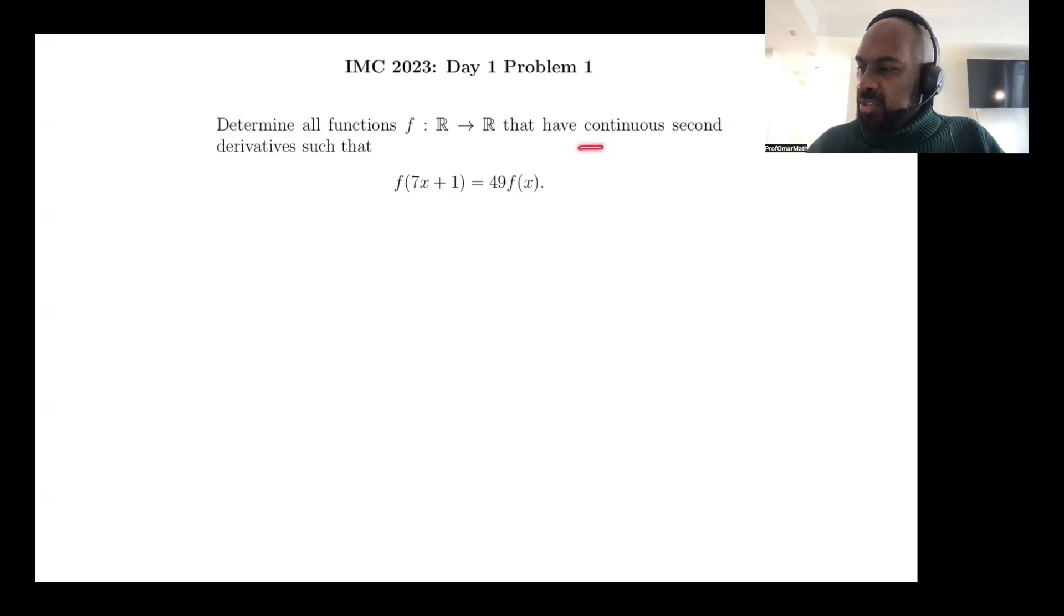So there's actually a hint on how to start the problem. We're given that the function has continuous second derivatives, so it makes sense to actually take a look at the second derivative and see what happens.